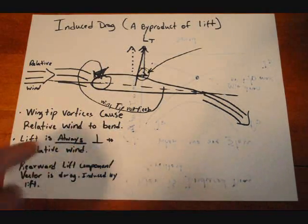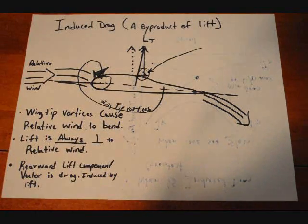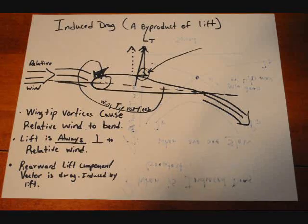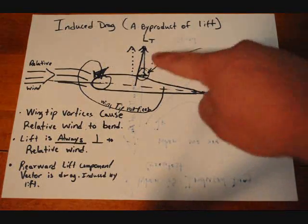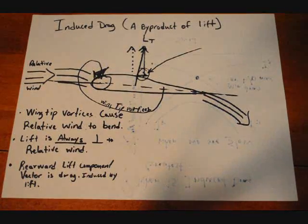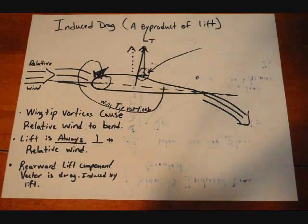Lift is always perpendicular to relative wind and that rearward component vector is our drag which is induced by the creation of lift. It would not exist if we weren't creating lift. That's why they say it's a byproduct of lift.